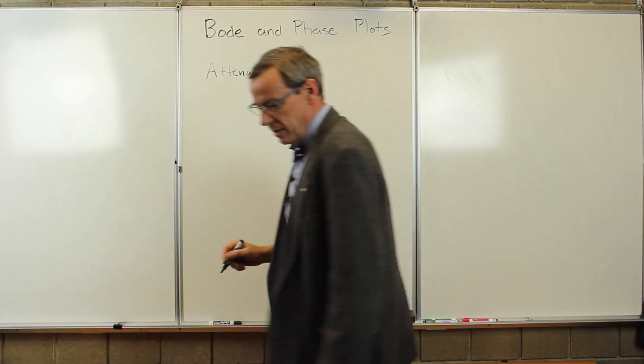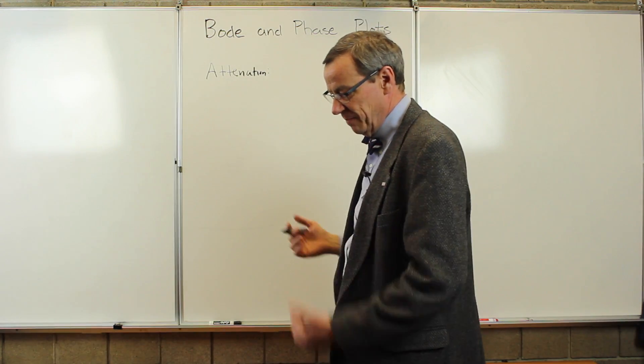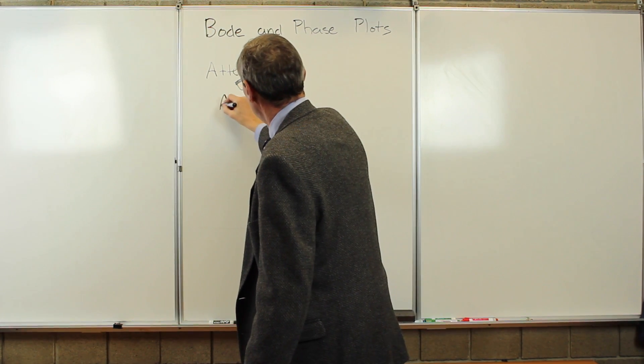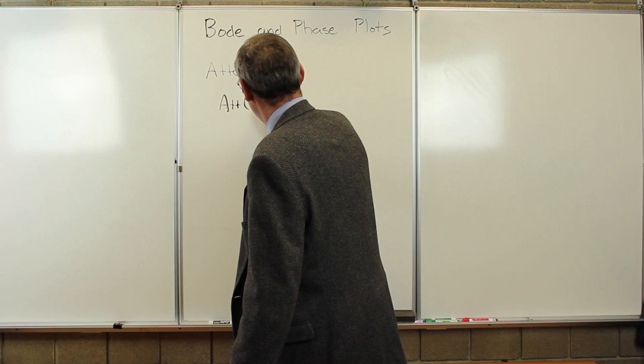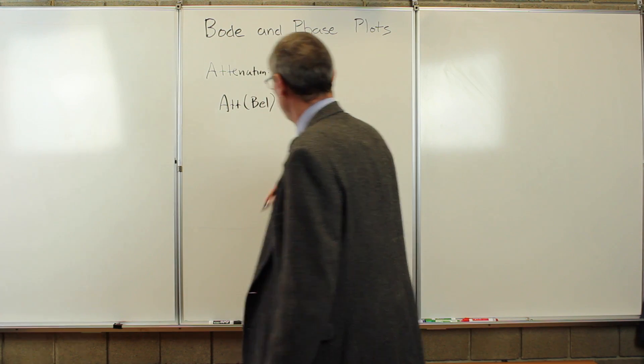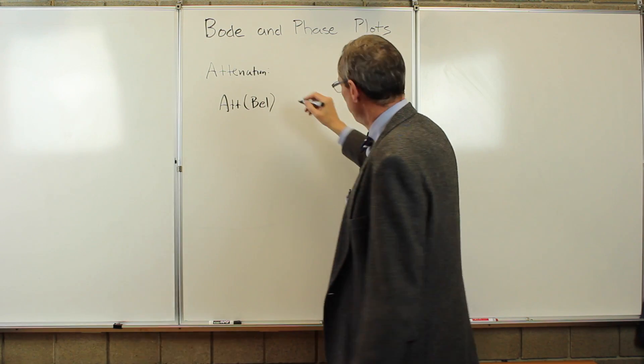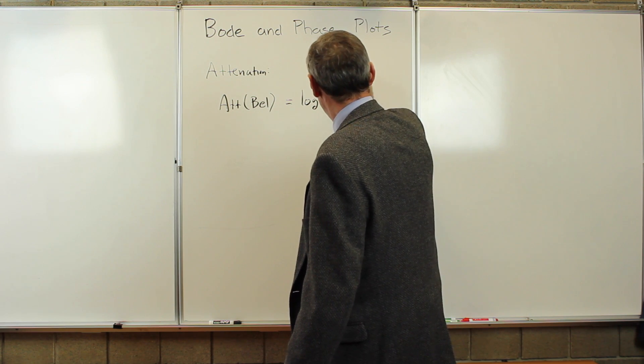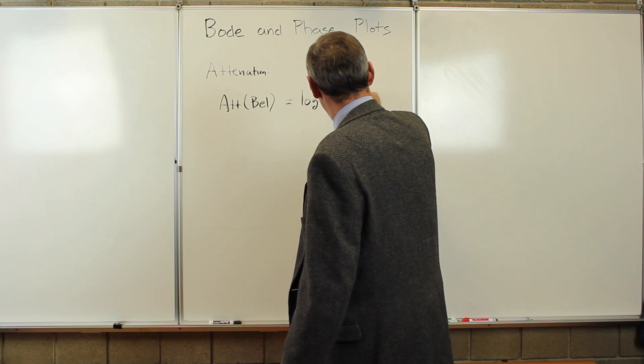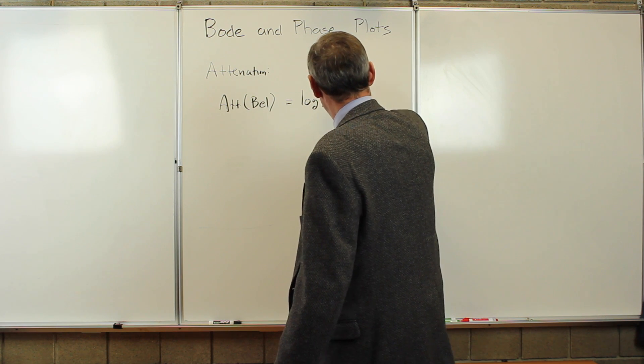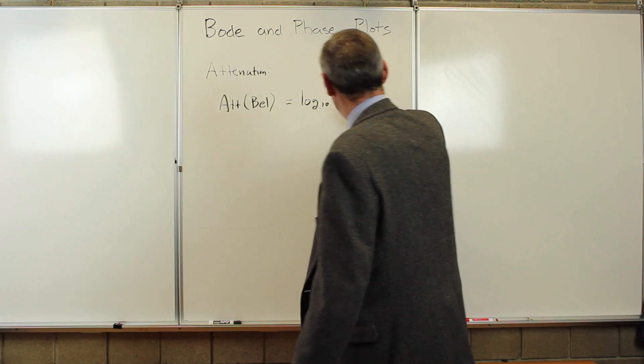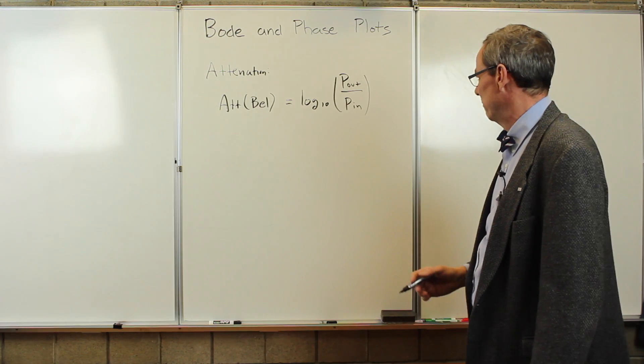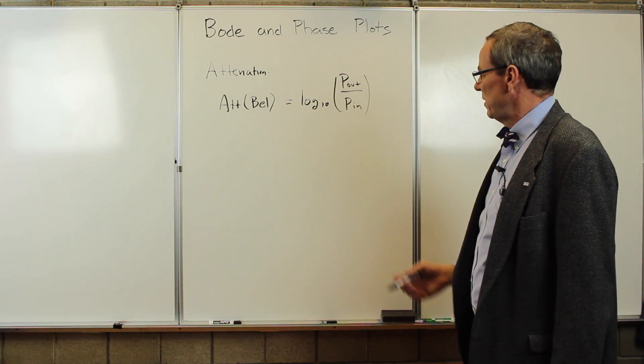So the attenuation is defined to be basically how fast the power falls off. So the attenuation in units of Bells, named after Alexander Graham Bell, is the log base ten of the output power over the input power or the output power over some reference power. It's something power versus some reference, either the input or a reference here. So that's the attenuation.